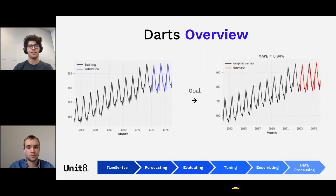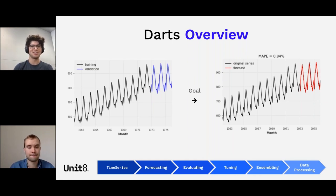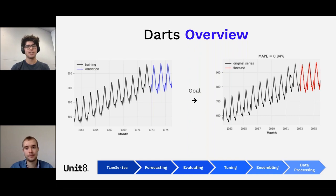This is going to be our example today — a toy dataset representing milk production. It's not super insightful, but we're going to use it to showcase what DARTS can do. The goal is what you see on the right: a forecast that is very accurate. Since we only have training and validation sets and no test set, we will overfit our model to get it. But it will still be useful to give you an example of how you would forecast, backtest, and grid search with DARTS.